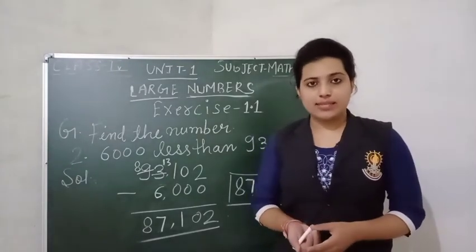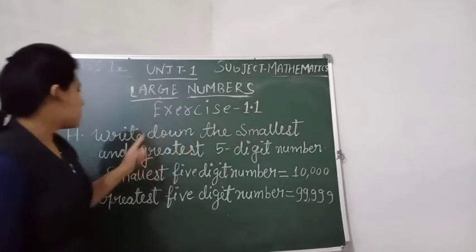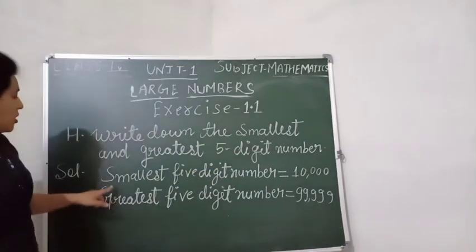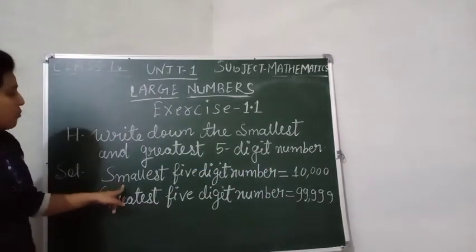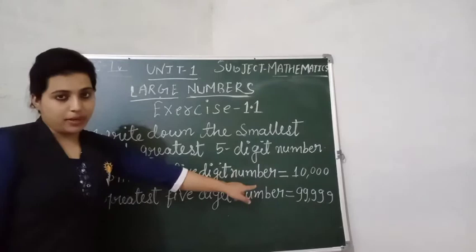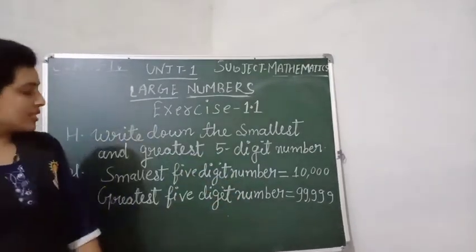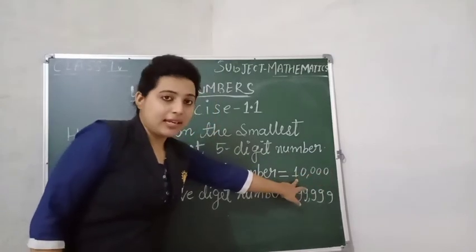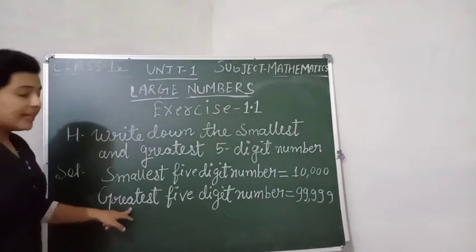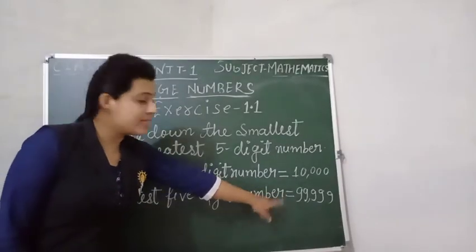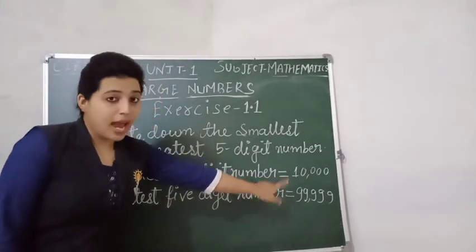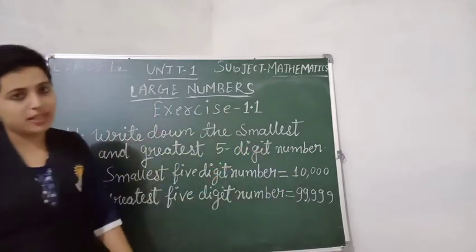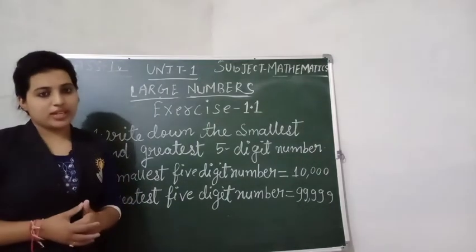Now question H: write down the smallest and greatest 5-digit number. The smallest 5-digit number is 10,000. And the greatest 5-digit number is 99,999.